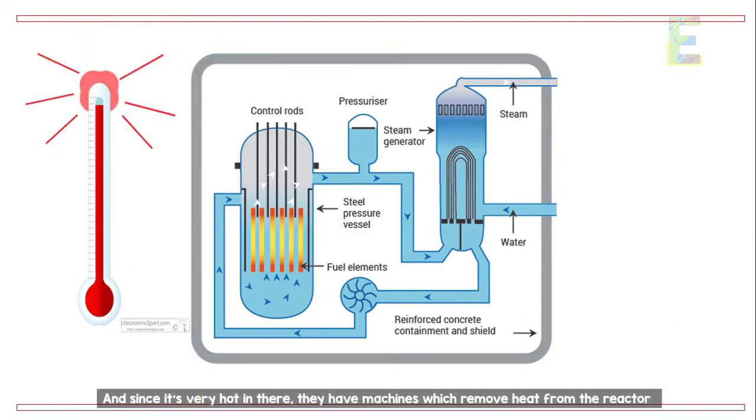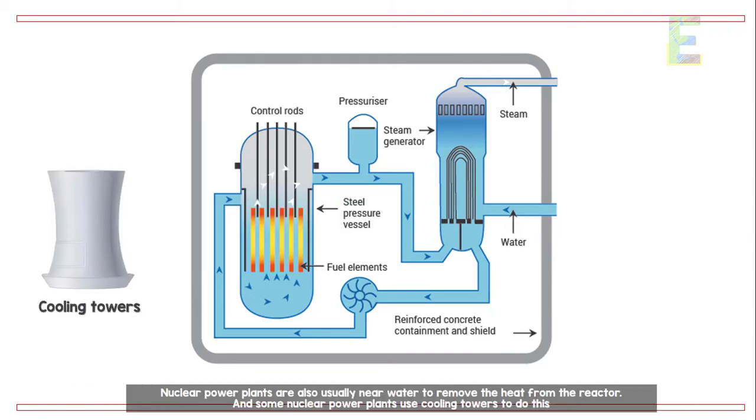And since it's very hot in there, they have machines which remove heat from the reactor. Nuclear power plants are also usually near water to remove the heat from the reactor, and some nuclear power plants use cooling towers to do this.